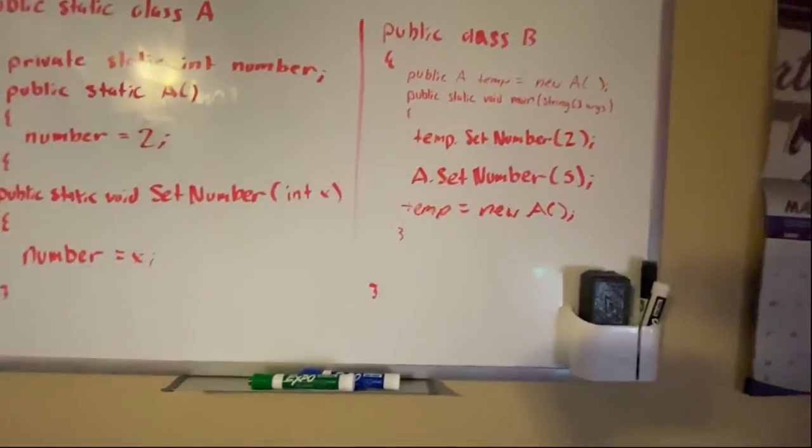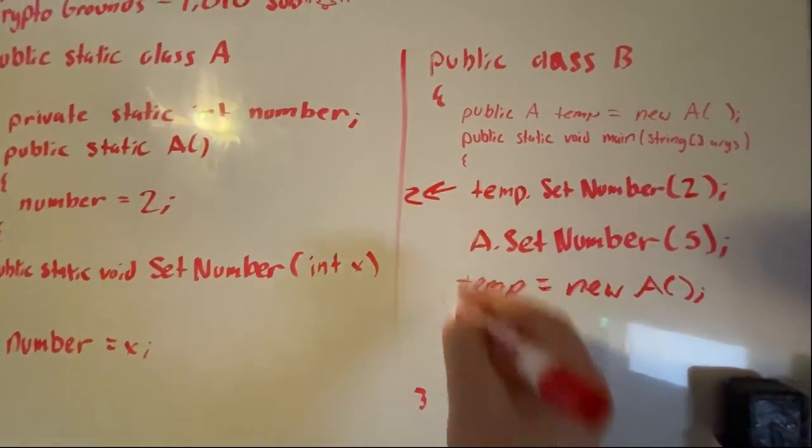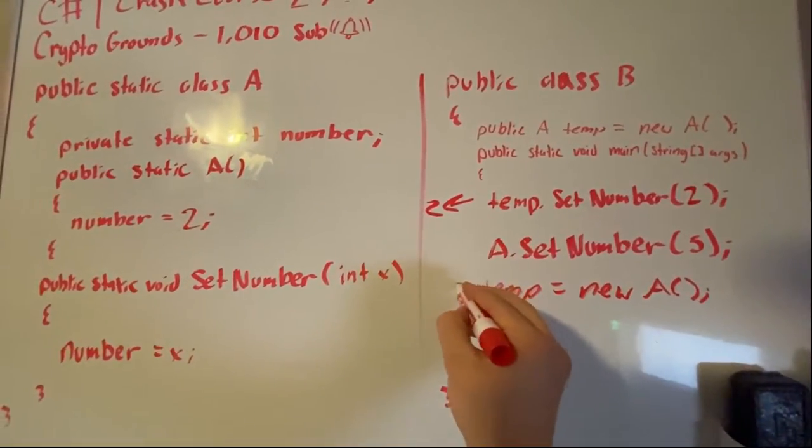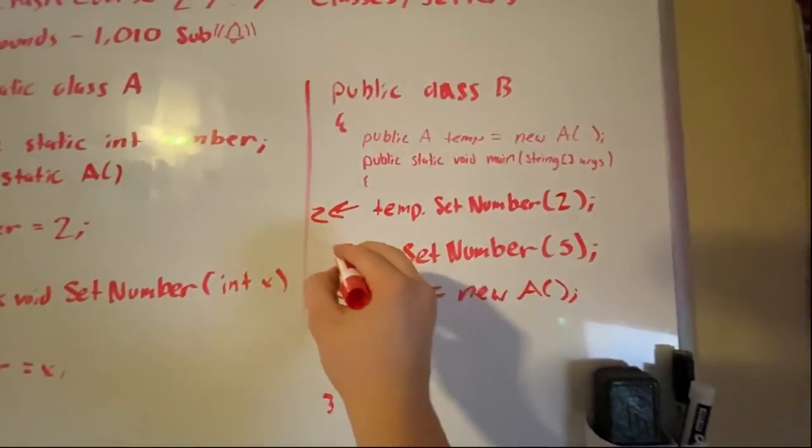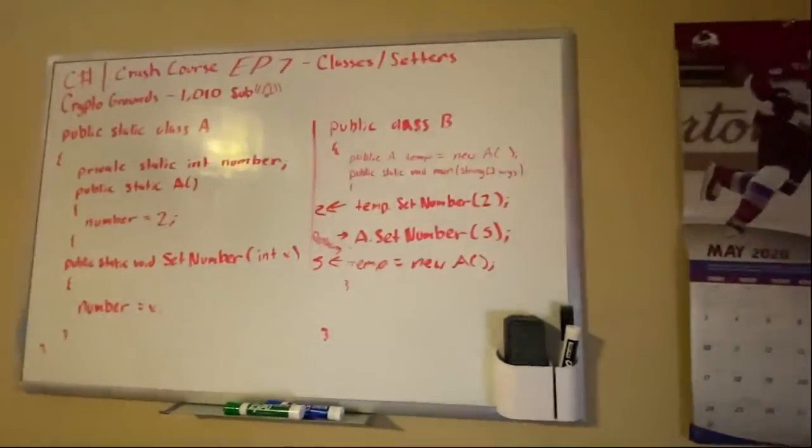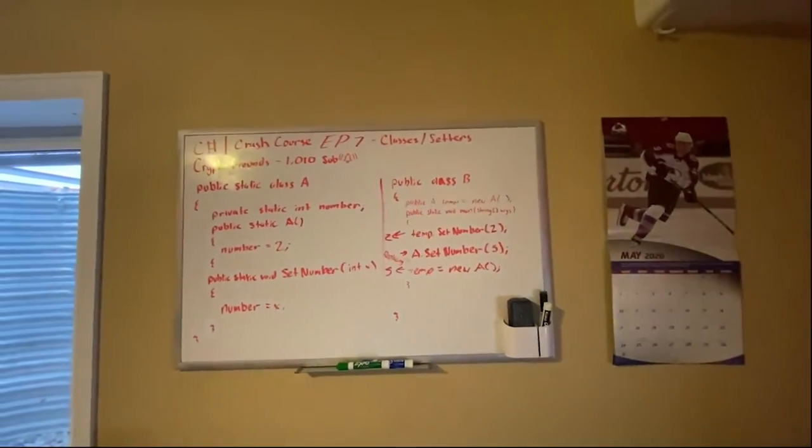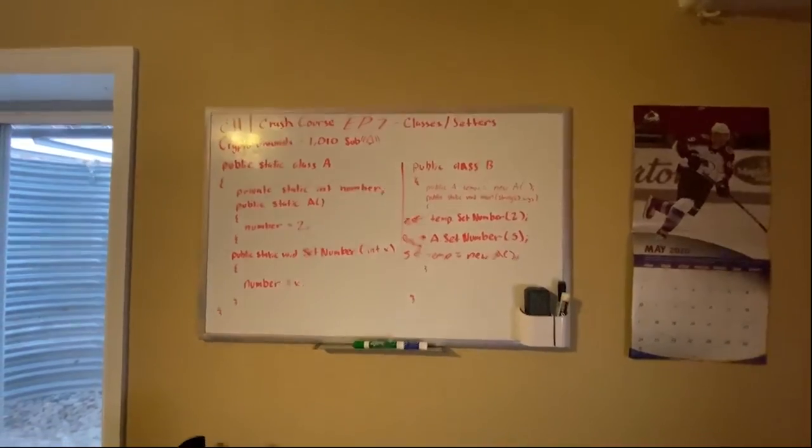So basically, we want that to be 2, right? So before, this is 2, number is 2. But in here, number is 5 because we are replacing—this is replacing 2.